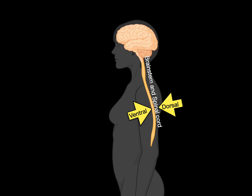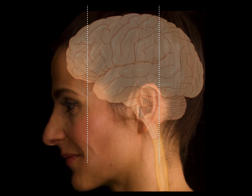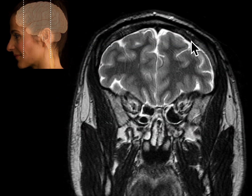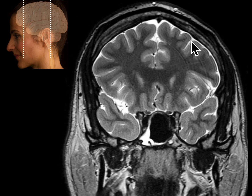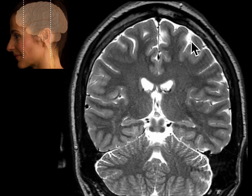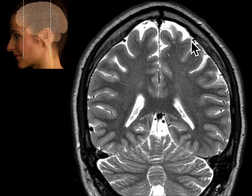We also use anterior and posterior synonymously. Let's practice. Here we have two vertical lines representing coronal sections — one towards the front, rostral, and one towards the back, caudal. Now let's take a look at a coronal MRI. We're starting rostrally, then moving caudally all the way to the back where you can see the cerebellum.